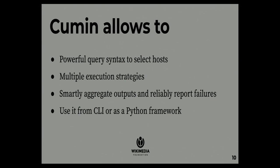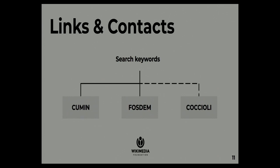To recap: Cumin has a powerful query syntax to select hosts, allows multiple execution strategies, aggregates output smartly, and reliably reports all failures. It can be used as a command line tool or as a Python framework library in your other automation or orchestration tools. For more information — source code, PyPI releases, GitHub releases, documentation, and how we use it at the Wikimedia Foundation — all links are listed on the FOSDEM page for this talk. You can find them by searching for Cumin FOSDEM, optionally with my name, on any search engine.